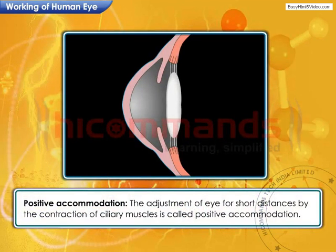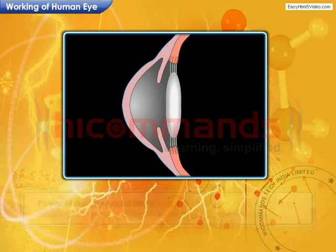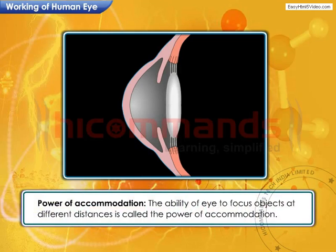The adjustment of the eye for short distances by the contraction of ciliary muscles is called positive accommodation. The adjustment of the eye for long distances by the relaxation of ciliary muscles is called negative accommodation. The ability of the eye to focus objects at different distances is called the power of accommodation.